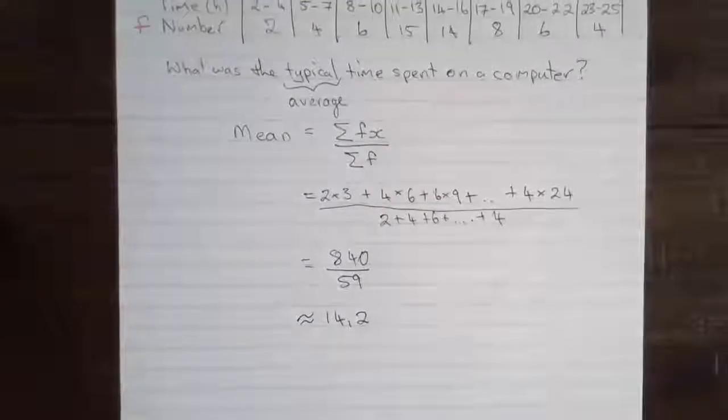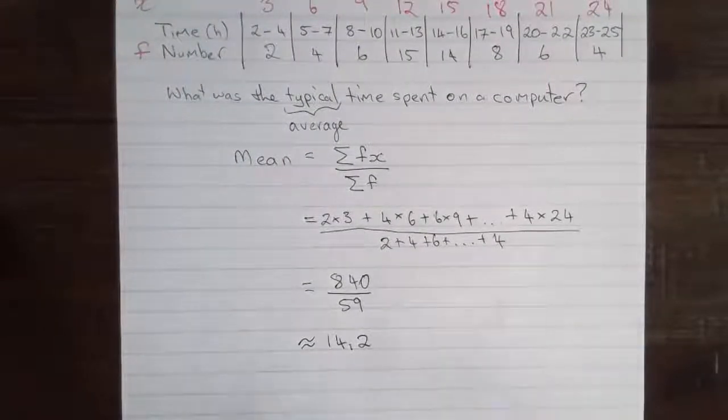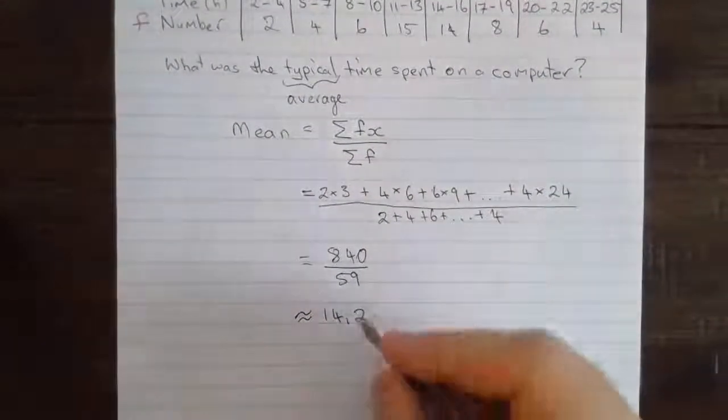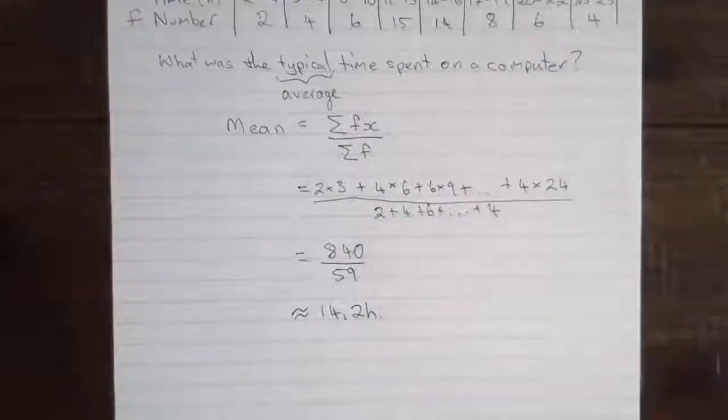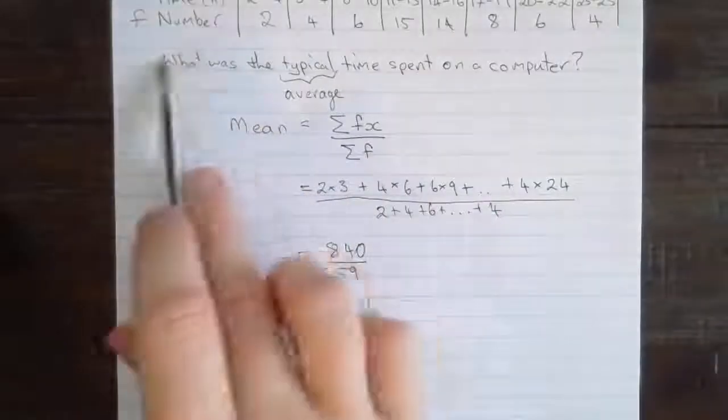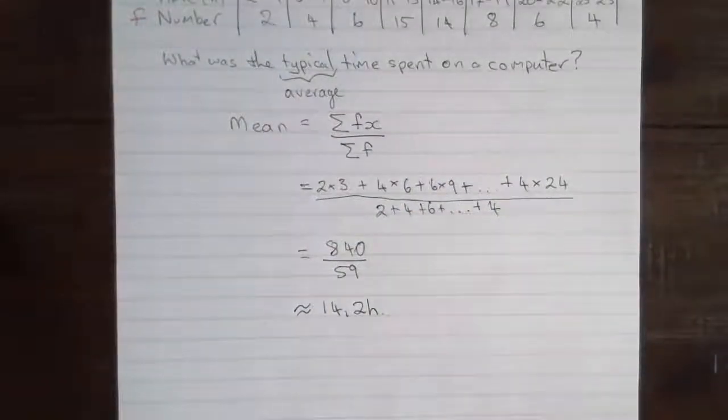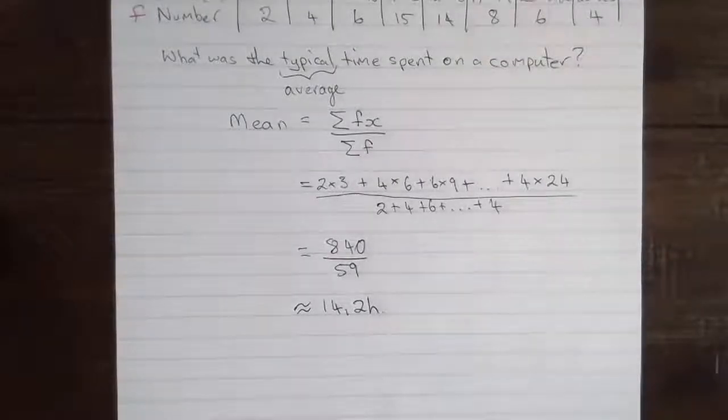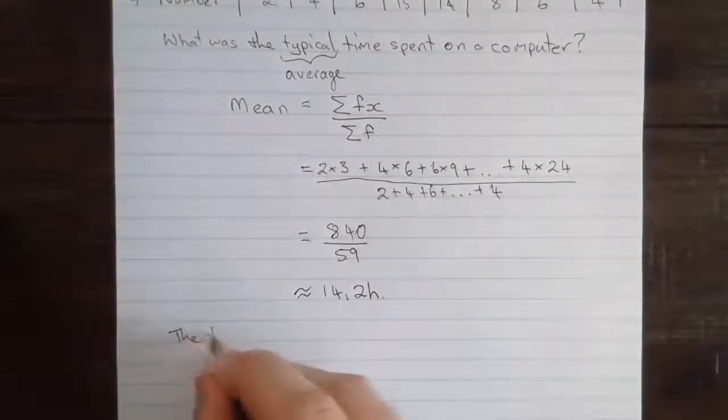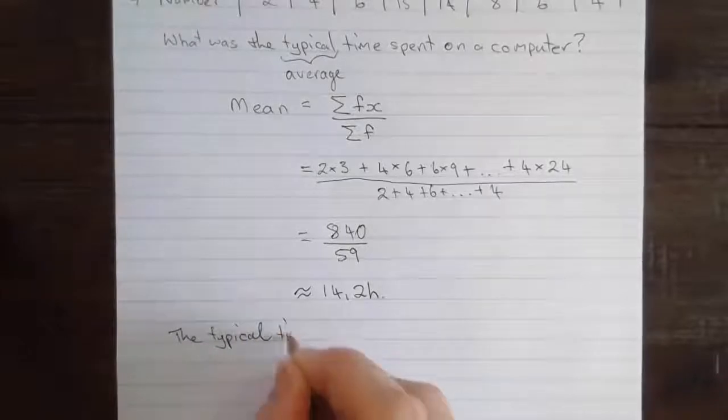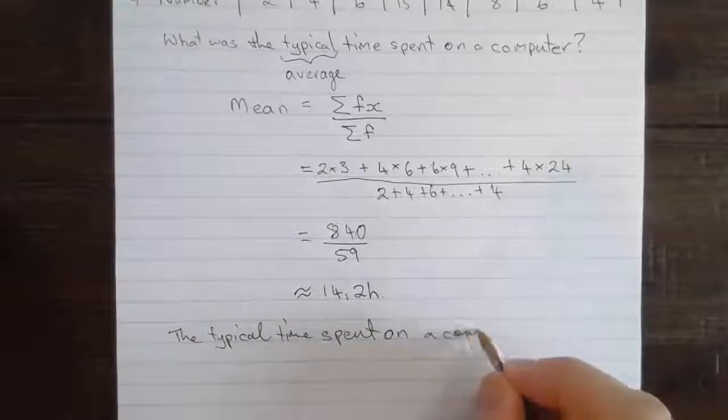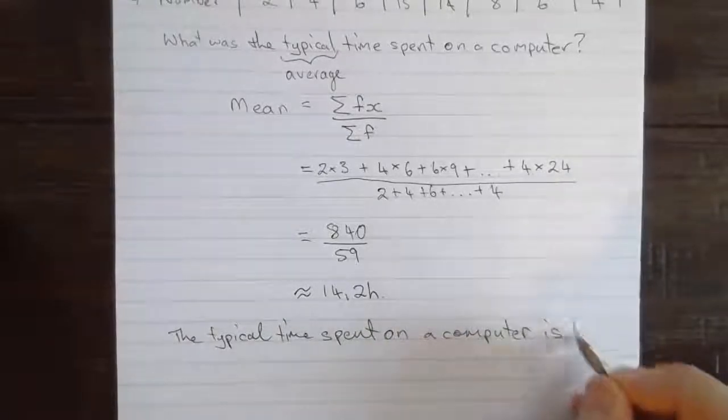14.2 what? Looking back at the data, this is going to be a value for time. So we need to figure that that's going to be 14.2 hours. The final thing that we also need to do in one of these modelling and problem-solving activities, is to answer the specific question we were given, and to do so in words, or in sentence form. So we were asked, what was the typical time spent on a computer by one of these students? Well, the average time. So I'm going to finish off by writing that the typical time spent on a computer is 14.2 hours.